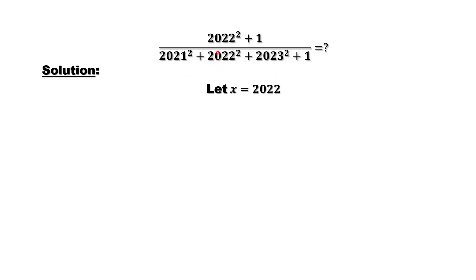If we define 2022 as x, what is 2021 in terms of x? It should be x minus 1. What is 2023? It should be x plus 1. So we have (x minus 1) squared and (x plus 1) squared. If we expand both, we will find one is negative and one is positive for the x term, so we can cancel.